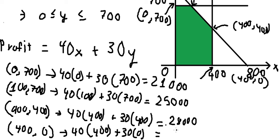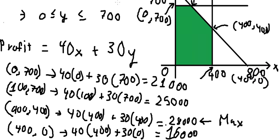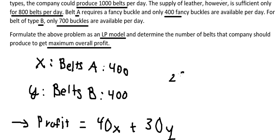For (400, 0): Z = 40×400 + 30×0 = 16,000. Since we want to maximize profit, we select the highest value. We need to produce 400 units of belt A and 400 units of belt B, giving a maximum profit of 28,000 rupees.